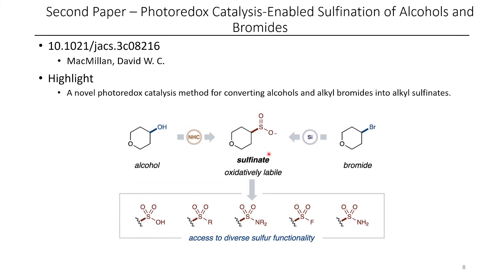Once you have a sulfonate, because these can just be treated with, for example, N-chlorosuccinimide or some other halogen source, you can get sulfonyl halides, and this can be readily converted into other derivatives that are useful for medicinal chemistry. So let's say you have an alcohol — you don't want an alcohol, you want to have a sulfonamide — now you have a way to do that. So that's pretty convenient.